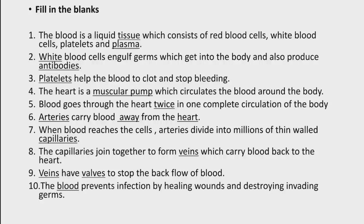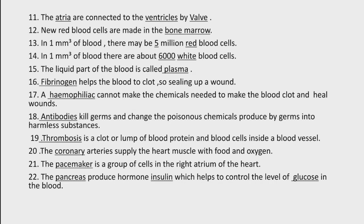جب body میں کوئی cut لگ جاتا ہے تو وہاں پر blood clot بن جاتا ہے جس کا function یہ ہوتا ہے کہ wounds کو fill up کرے اور germs کو destroy کرے۔ New red blood cells are made in the bone marrow. In 1 mm cube of blood there may be 5 million red blood cells, and about 6000 white blood cells. The liquid part of the blood is called plasma, in which red blood cells, white blood cells, and platelets are present۔